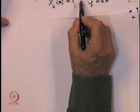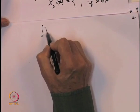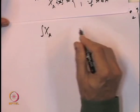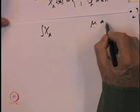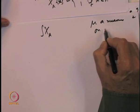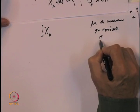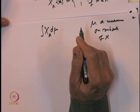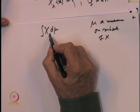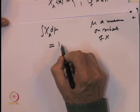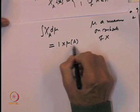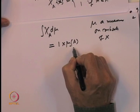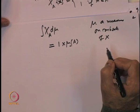We want to define the notion of integral with respect to a measure mu on x. We are going to write it as the integral of chi_A d mu. What should it be? On A the value is 1, so we would like to put it as 1 times mu of A. In some sense, mu of A is the size of the set and 1 is the height, so this is the area of the graph of the function.